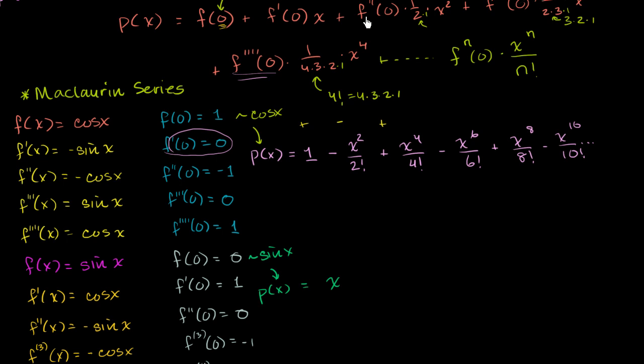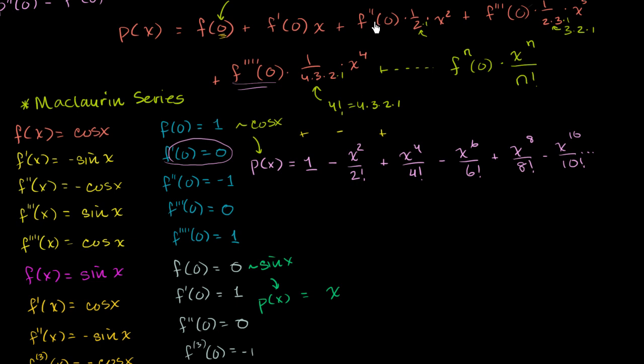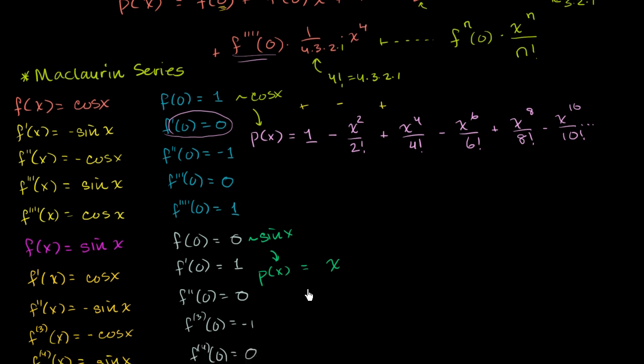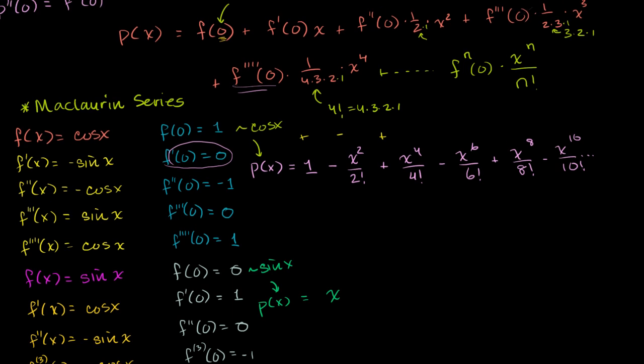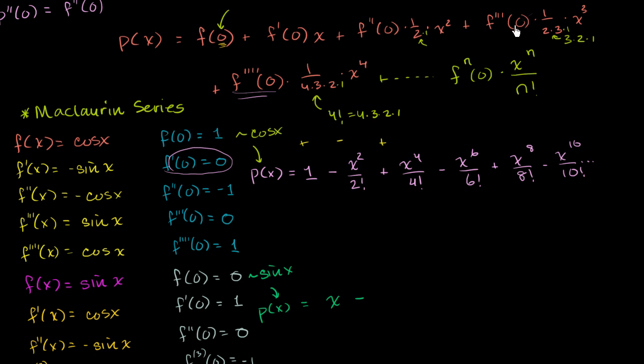Then the next term is f prime, the second derivative at 0, which we see here is 0. Let me scroll down a little bit. It is 0, so we won't have the second term. This third term right here, the third derivative of sine of x evaluated at 0 is negative 1. So we're now going to have a negative 1, negative 1. Let me scroll down so you can see this. Negative 1, this is negative 1 in this case, times x to the third over 3 factorial. So negative x to the third over 3 factorial.